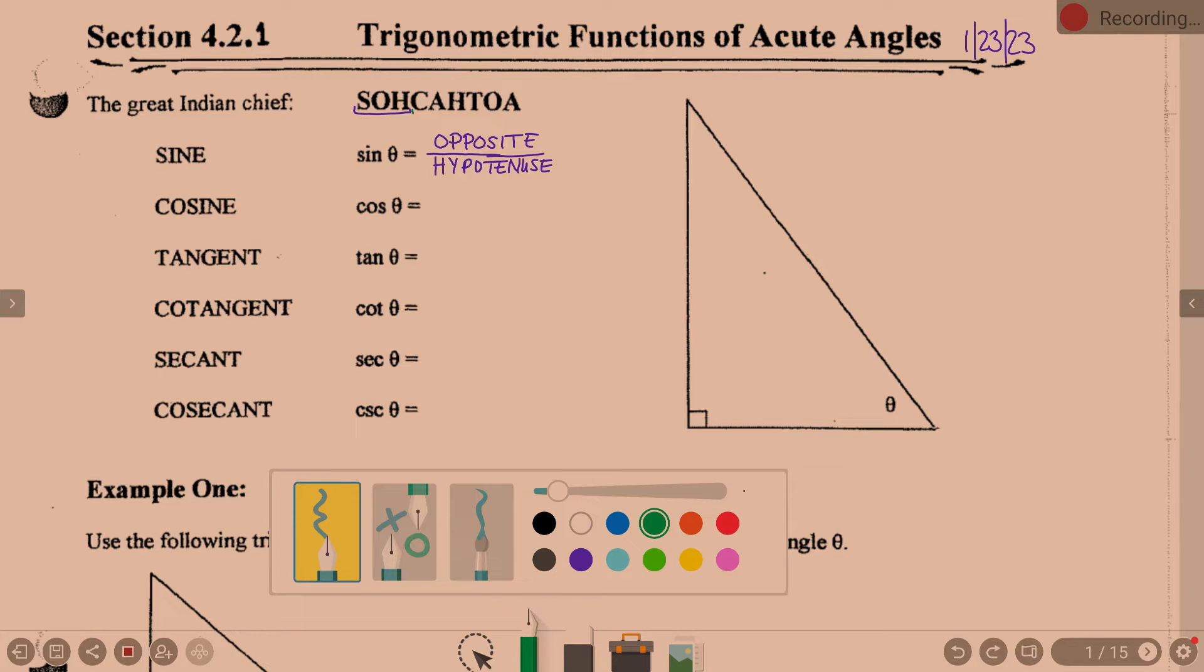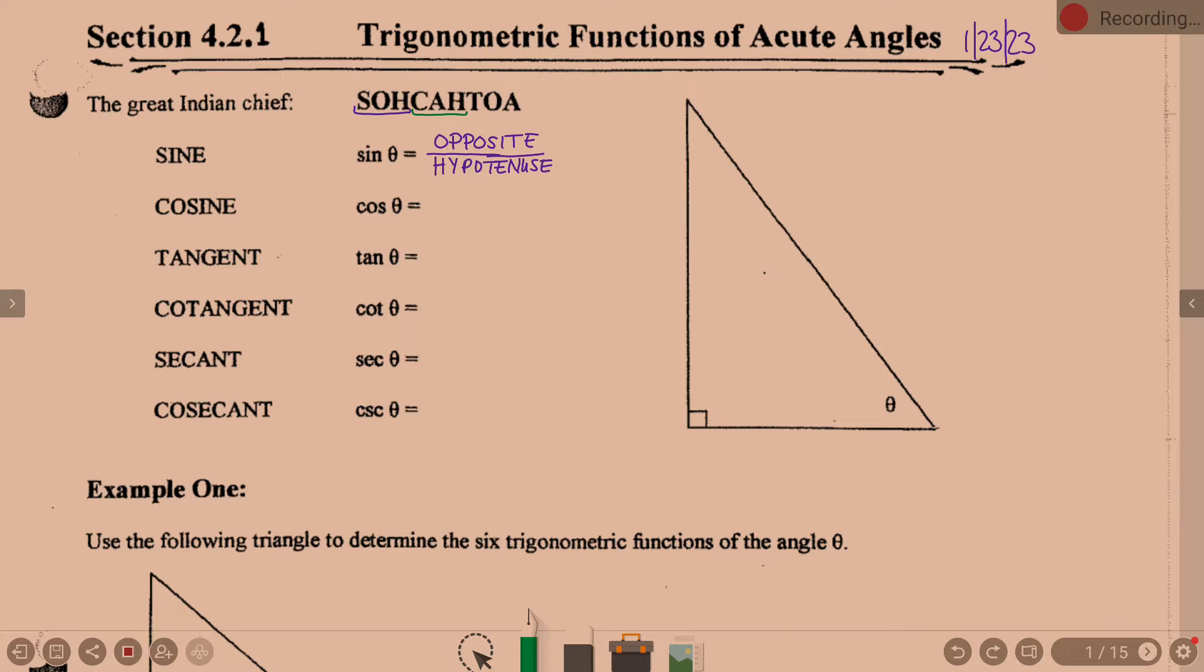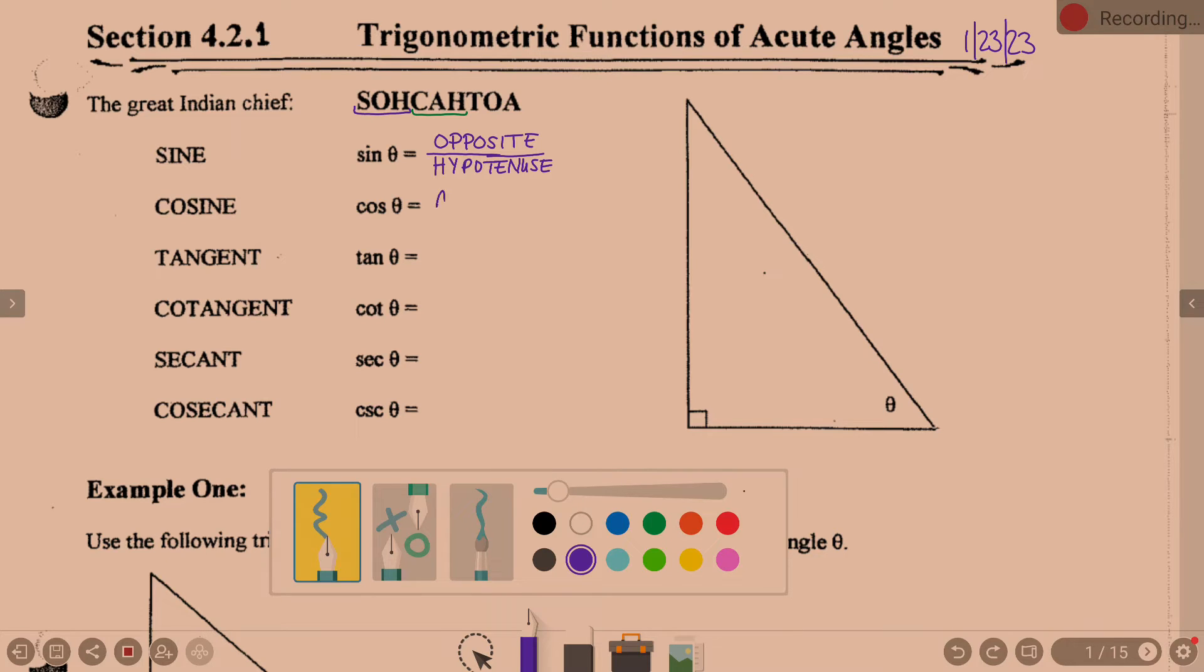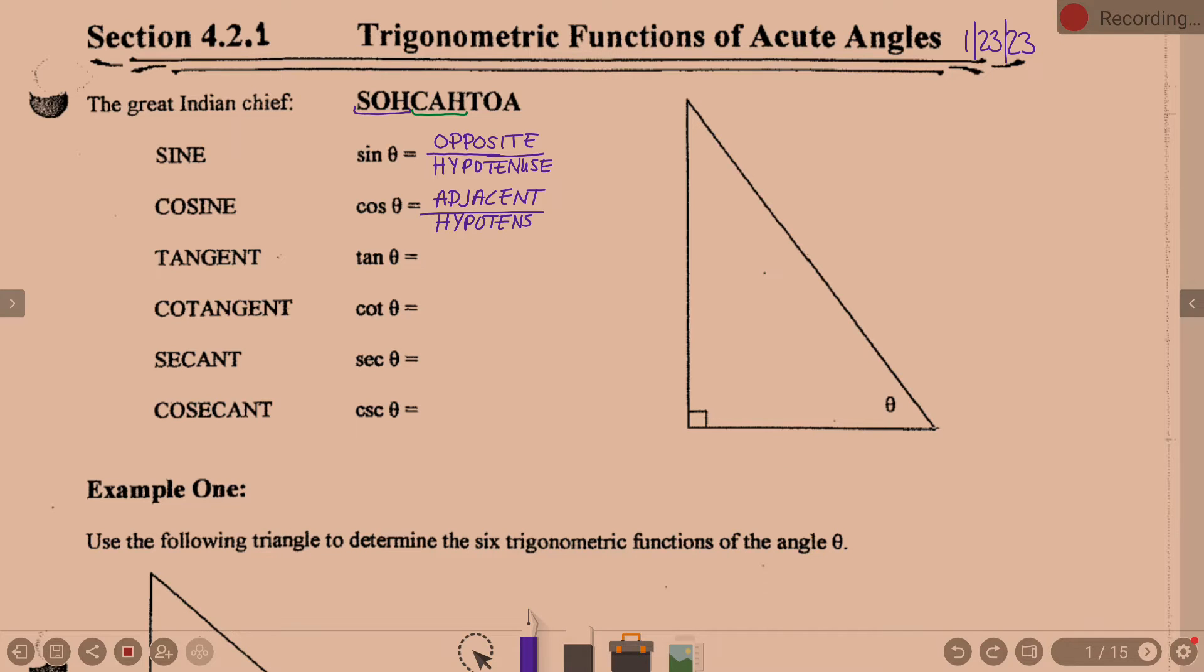Next part. The Soh K. Cosine is adjacent over hypotenuse. Soh Katoa is opposite over hypotenuse. Tangent is opposite over adjacent.